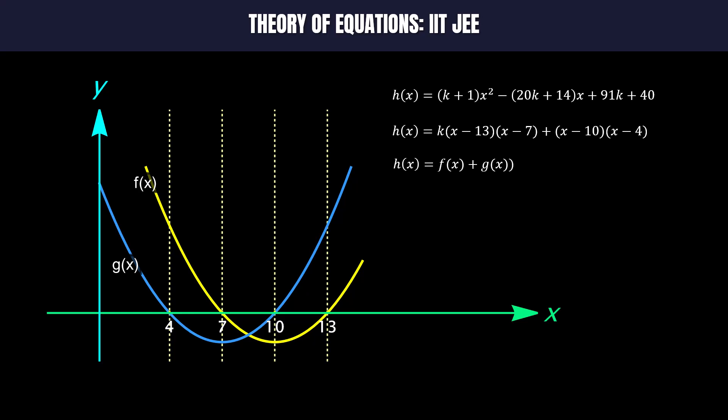Since alpha is less than beta, alpha will lie in open interval (4,7) and beta will lie in the open interval (10,13).